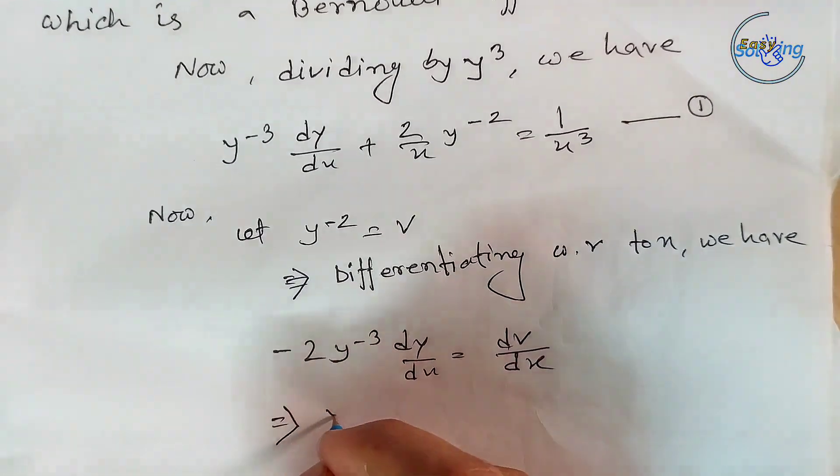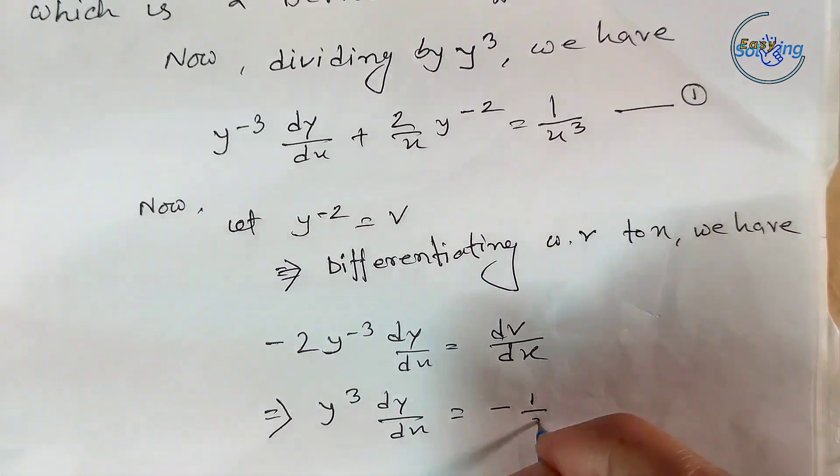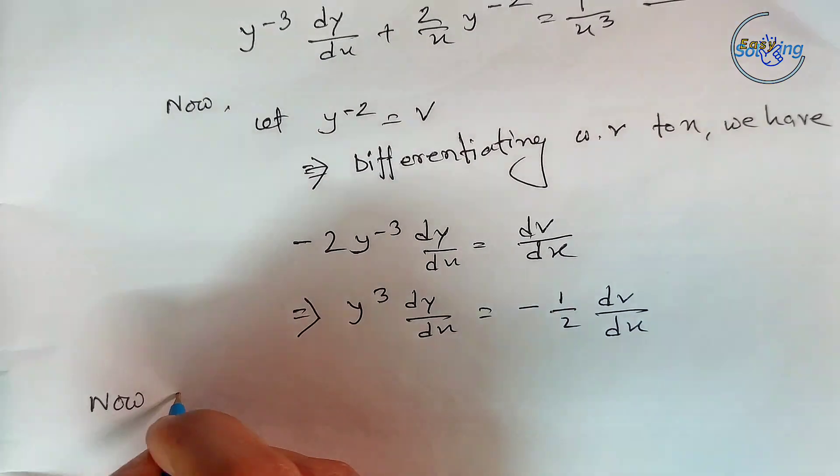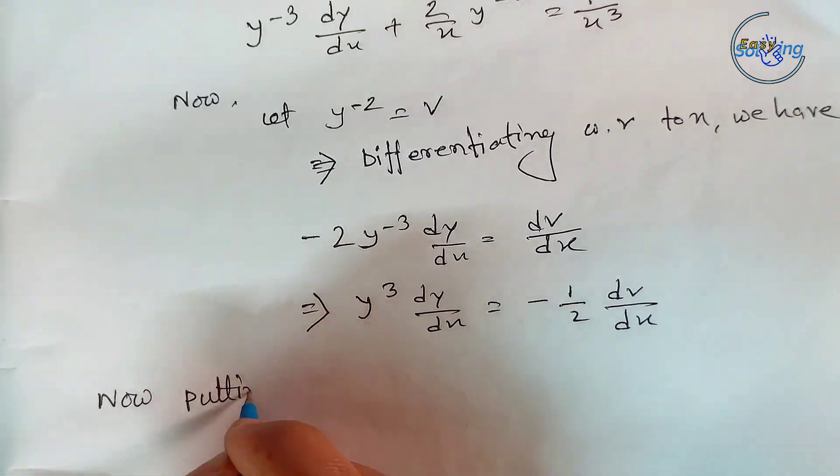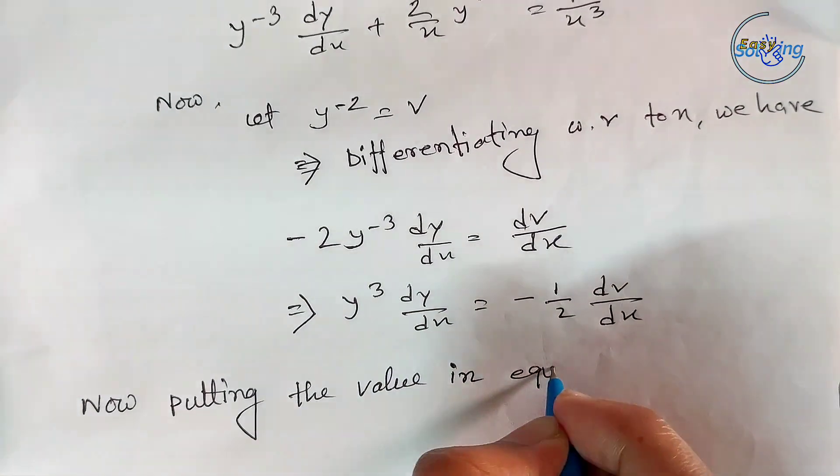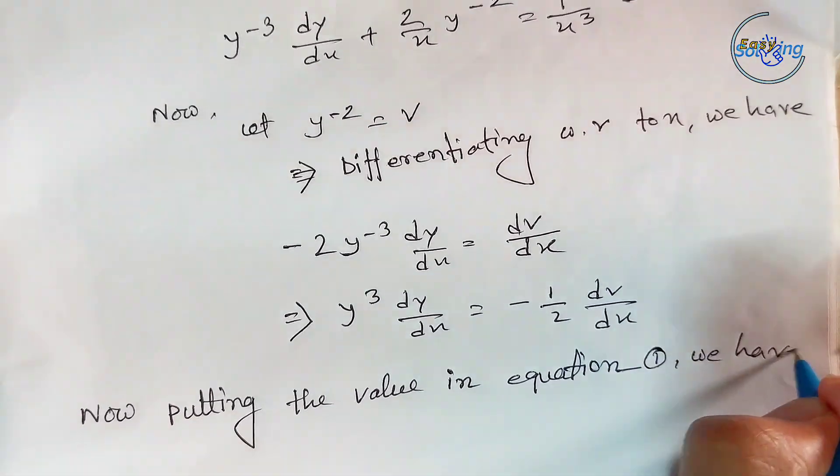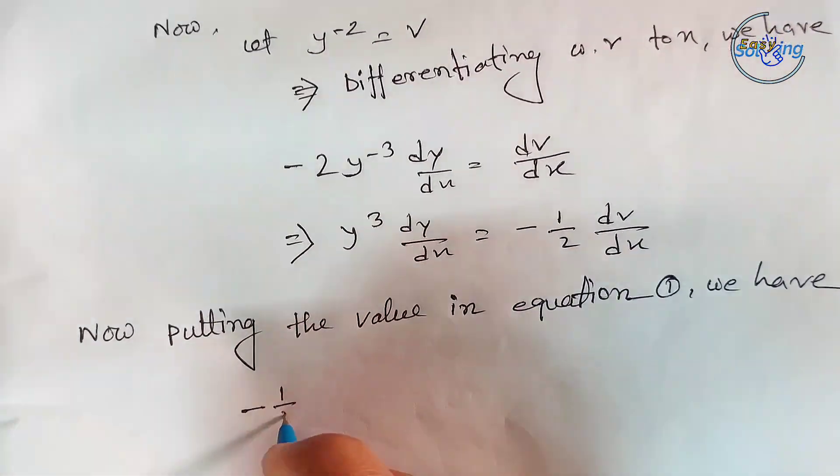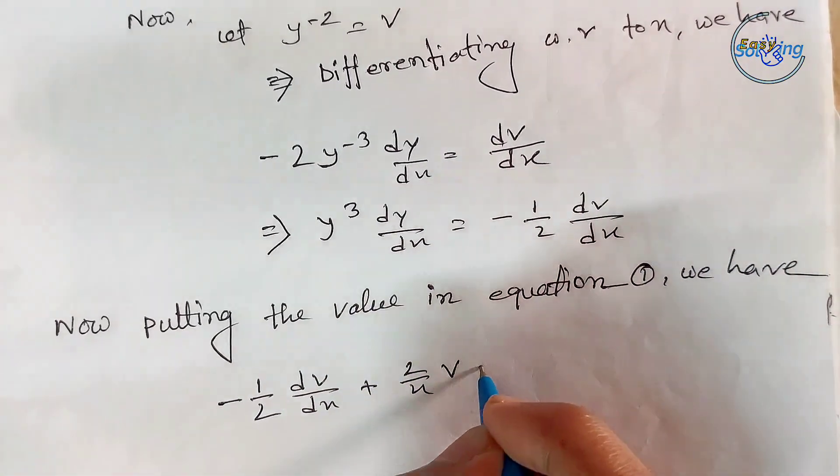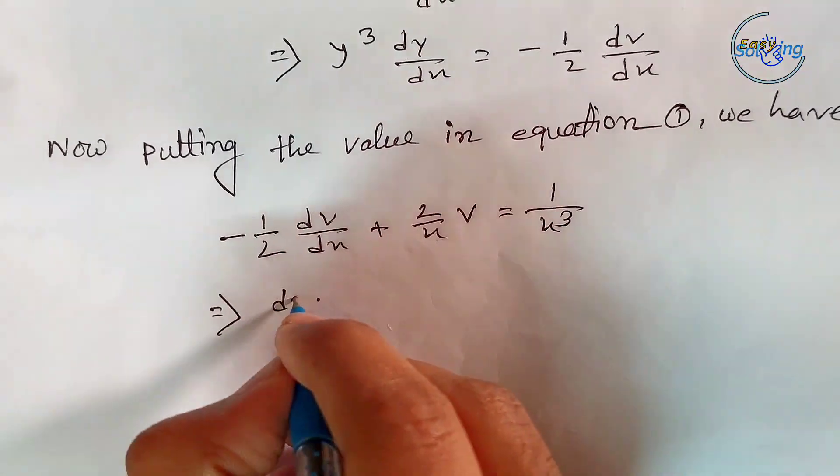-2y^(-3)·dy/dx = dV/dx, so y^(-3)·dy/dx = -½·dV/dx. Now putting this value in equation 1, we have -½·dV/dx + (2/x)·V = 1/x³.